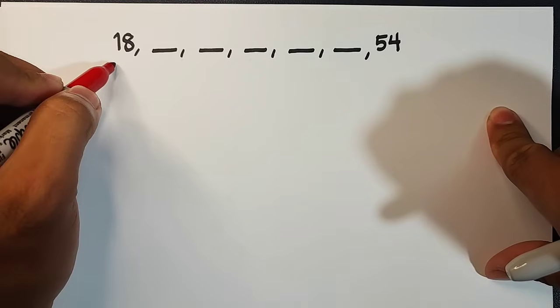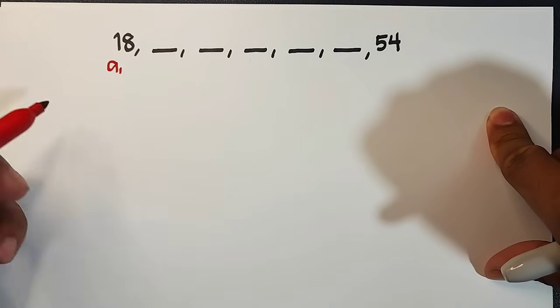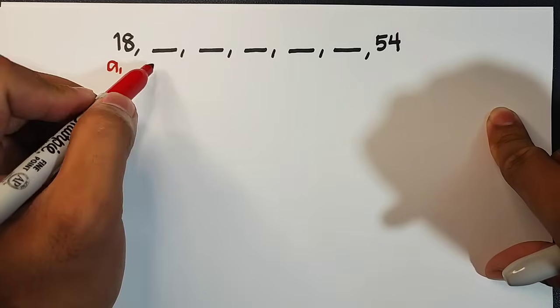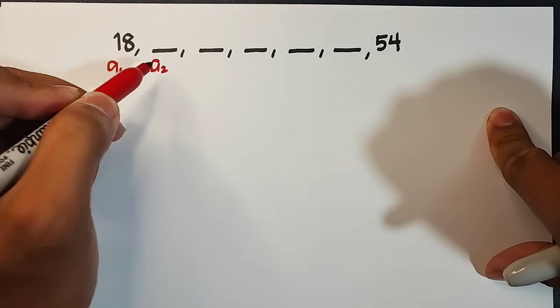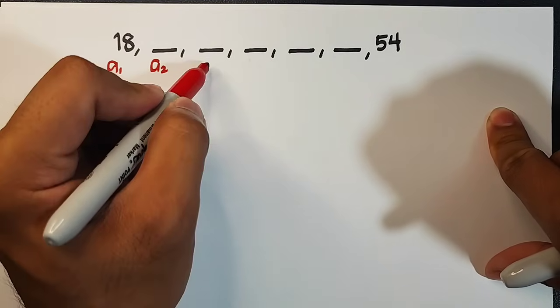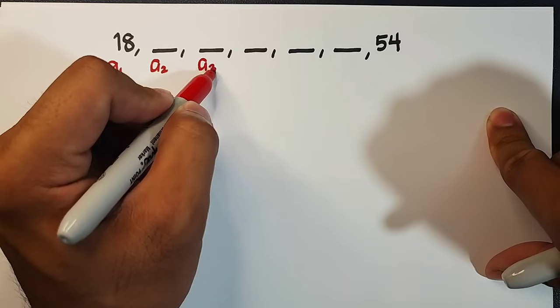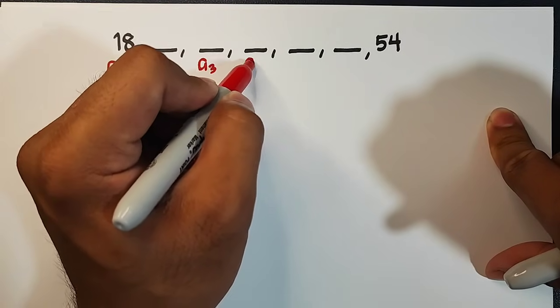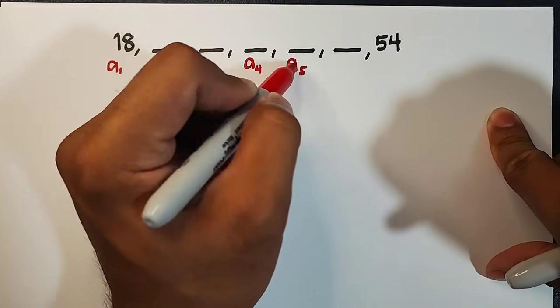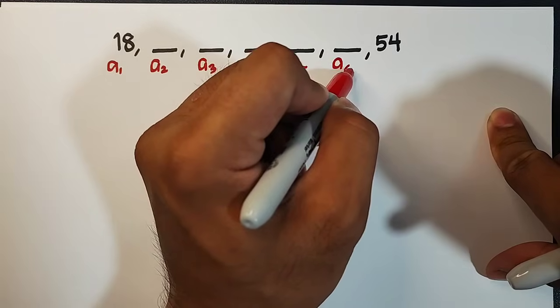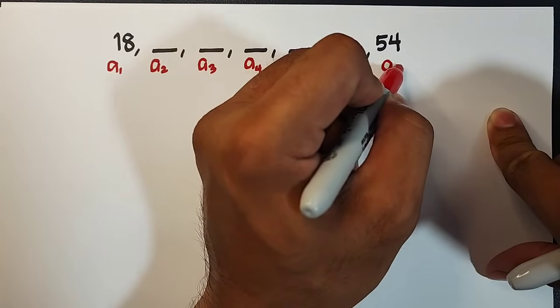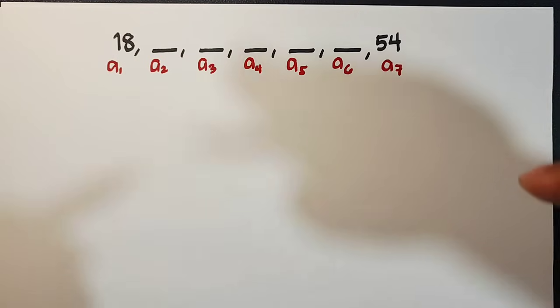This 18 is your a sub 1 or the first term. This is your a sub 2 or the second term. This is your a sub 3, third, a sub 4, a sub 5, a sub 6, and your last term which is a sub 7.